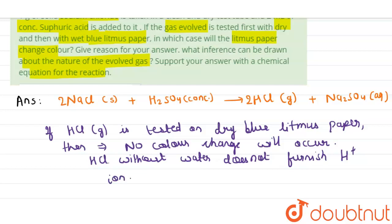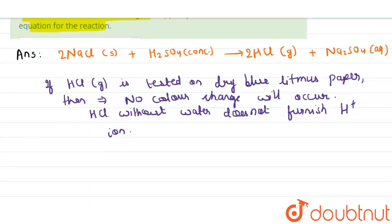And since the dry HCl is not furnishing H+ ion, so the color of blue litmus paper will not change, because blue litmus paper in the presence of hydronium ion changes its color to red. Okay, that's the reason.